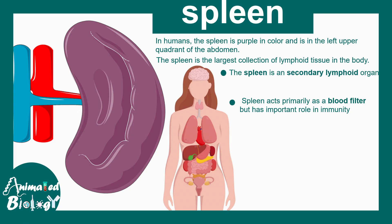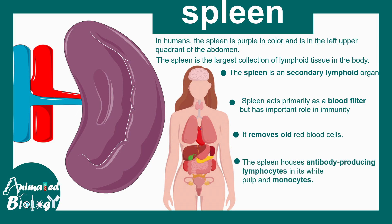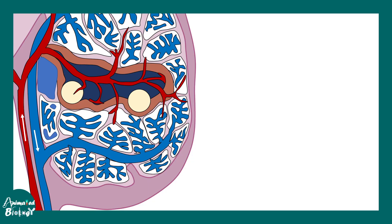The spleen acts primarily as a blood filter. It removes red blood cells, so it's a graveyard for RBCs. The spleen also has immunological functions because it houses lymphocytes such as B lymphocytes and monocytes.